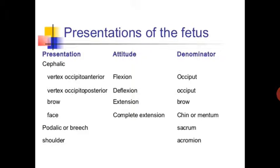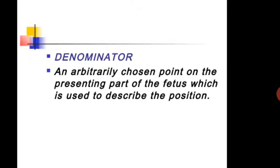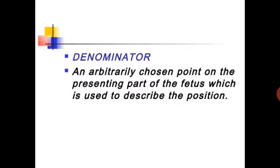In brow presentation, the attitude is extension and the denominator is the brow (forehead). The denominator describes the position of the fetus relative to the maternal pelvis.